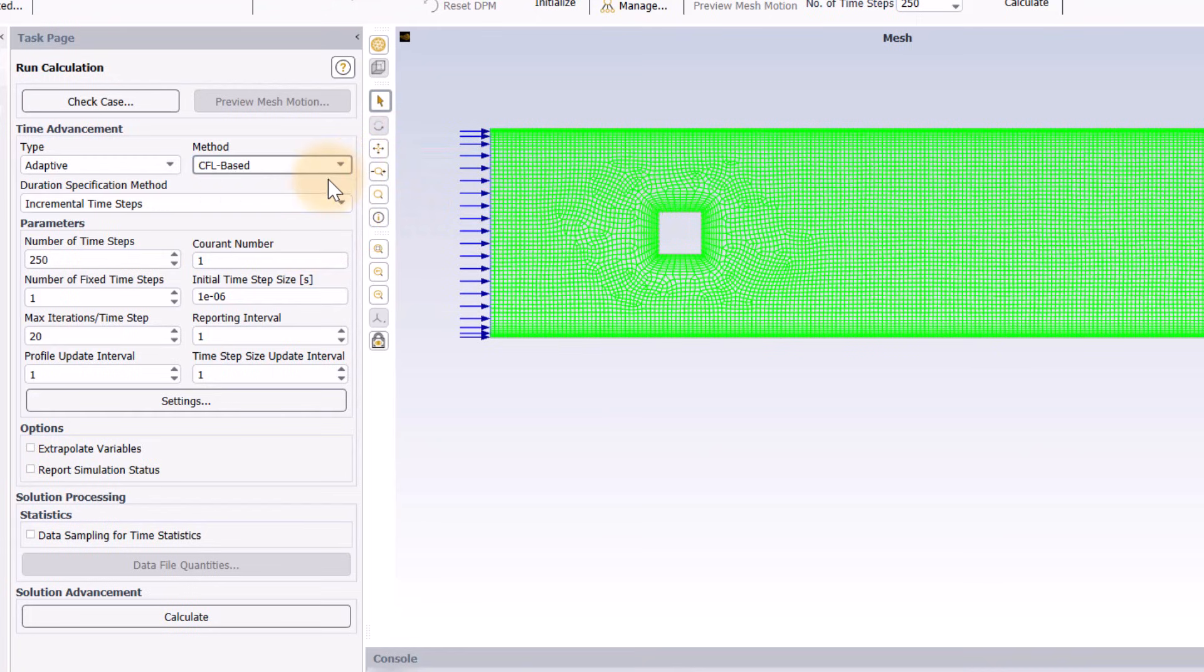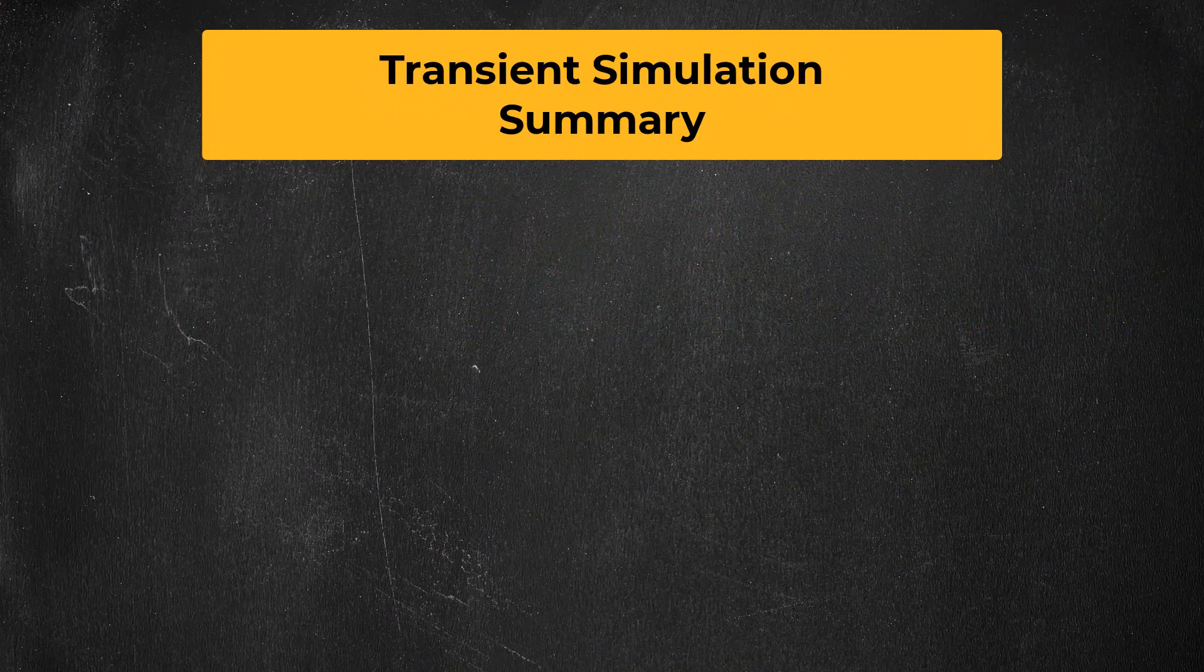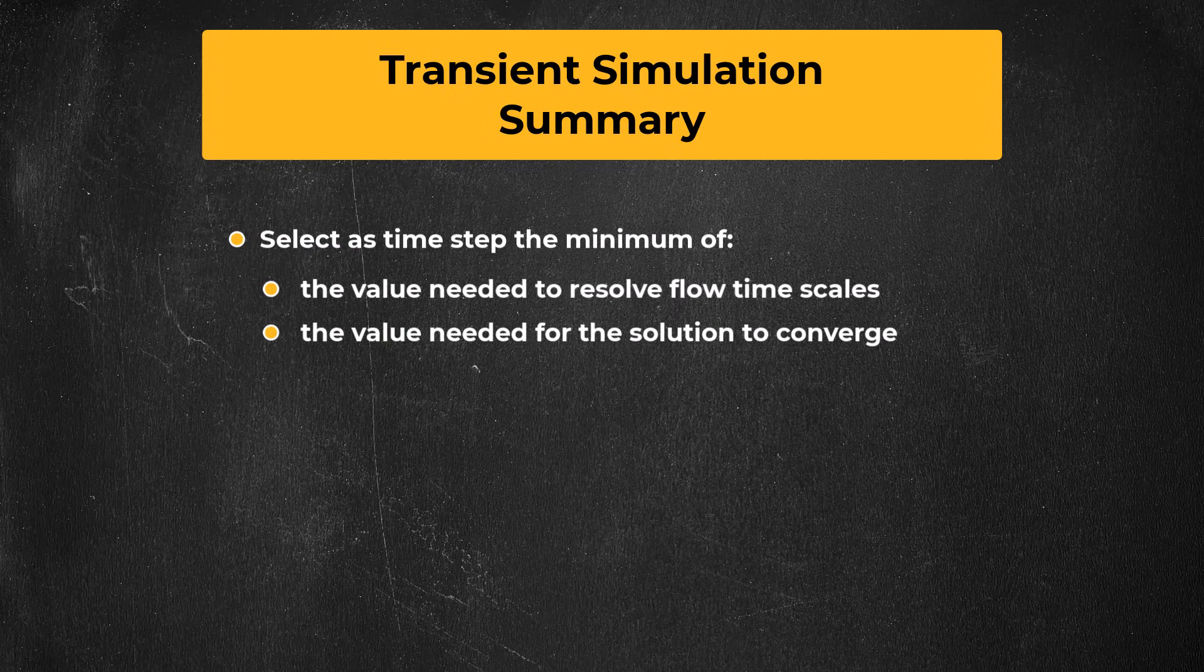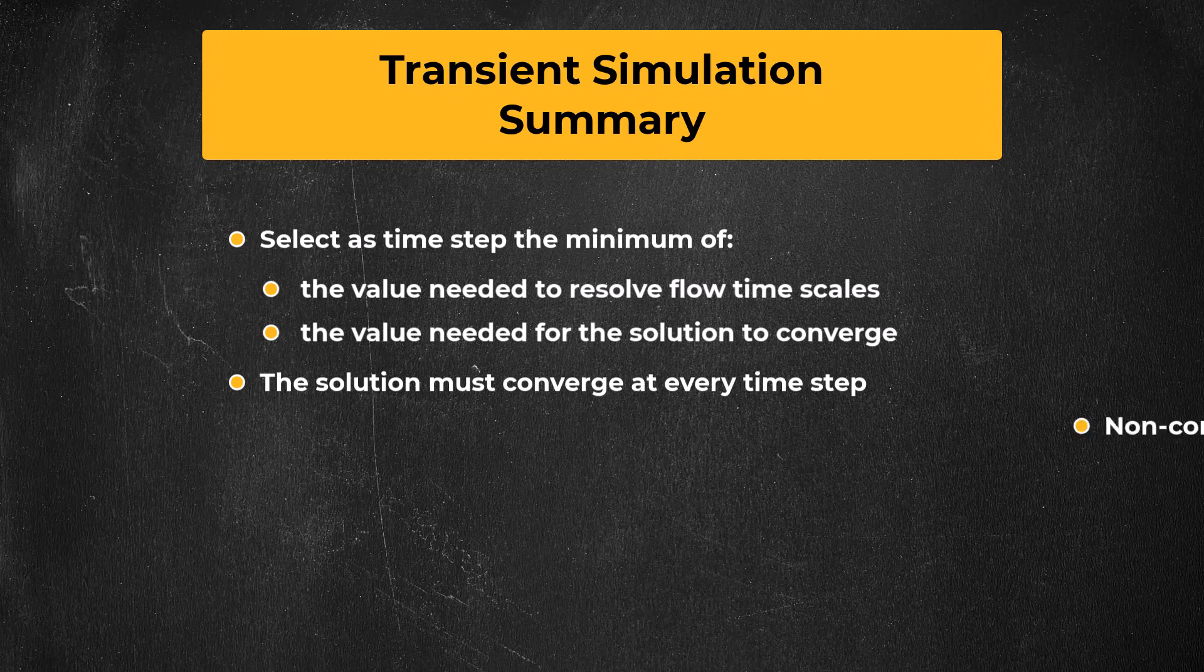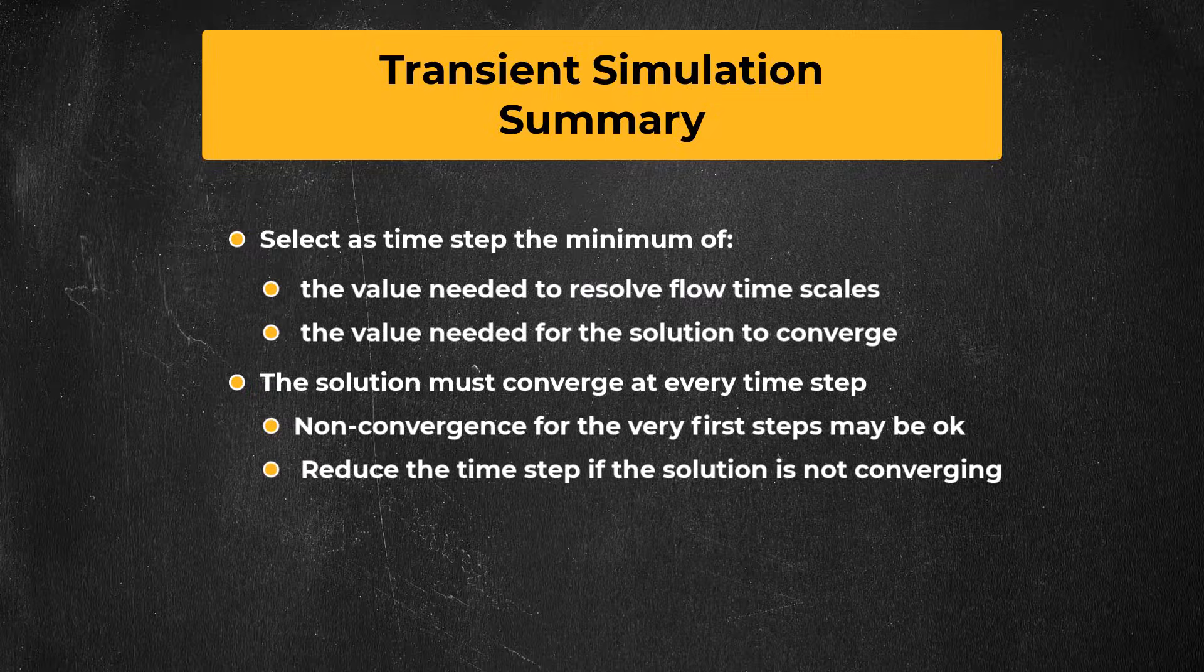Another thing I want to do on this panel is enter the number of iterations per time step. 20 is a good value for many cases. Sometimes you might need to adjust this depending on the convergence behavior. Remember that this is a maximum value, and most of the time we hope that the solution will converge in fewer iterations. Sometimes you will be interested in calculating the time average velocity or other flow variables. You can do that by checking data sampling for time statistics. When solving any unsteady problem in Fluent, the time step size you can use will be the minimum value of what is needed to resolve physical time scales in the flow, and what is needed to be able to converge the solution at each time step. The solution generally has to converge at every time step, but non-convergence during the first few time steps can sometimes be okay. If the solution is not converging, it's almost always more efficient to reduce the time step size.